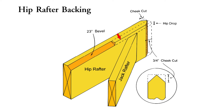The end of the hip jams into the corner formed by the king common and the first common on the side. Looking straight down at the top of the hip end, the hip is an inch and a half wide. For a regular pitch hip, the cheek cuts are at 45 degrees on each side — so half of the 1.5 inch width is 3/4 of an inch, and that's the horizontal setback for each cheek cut.